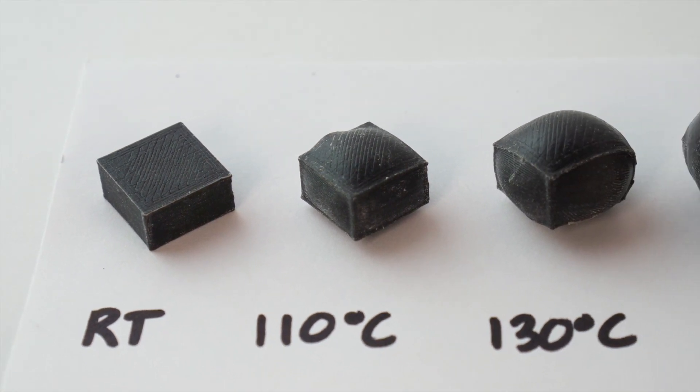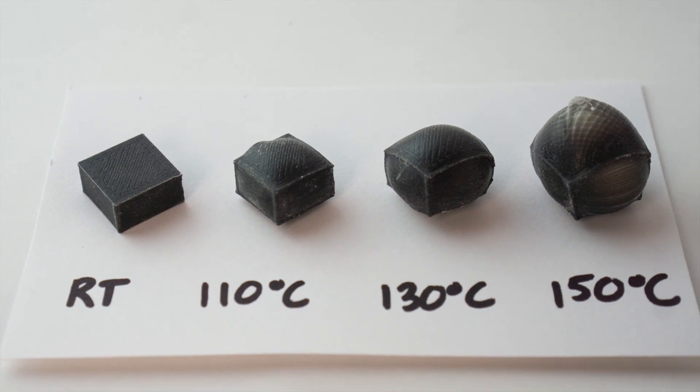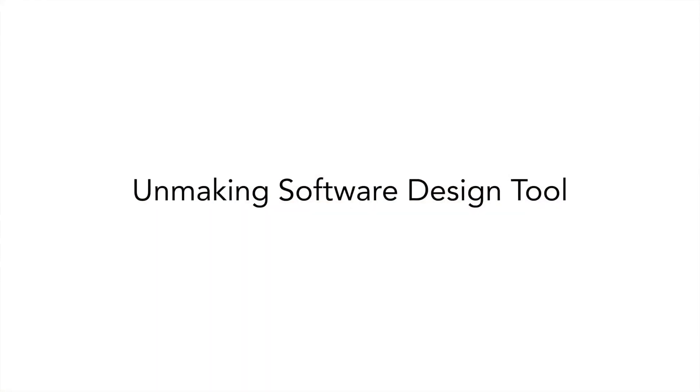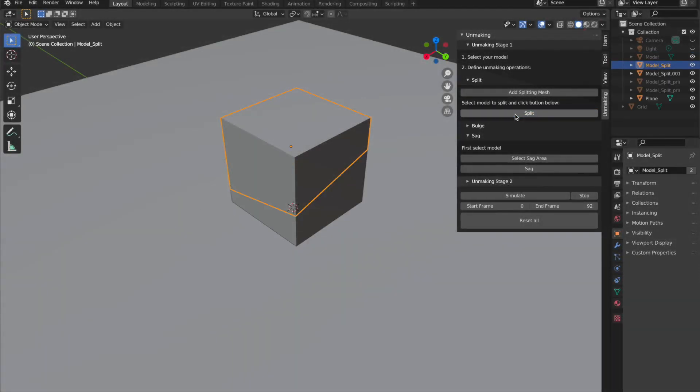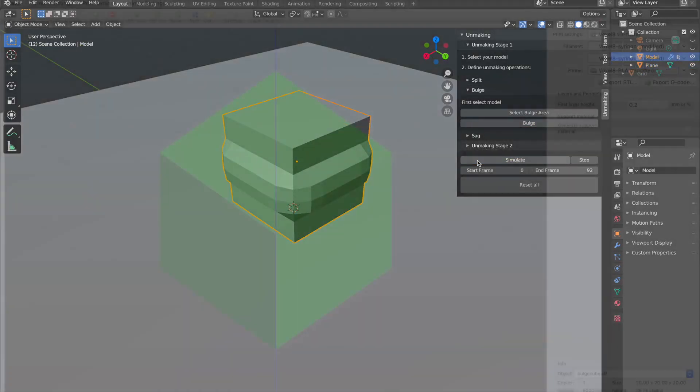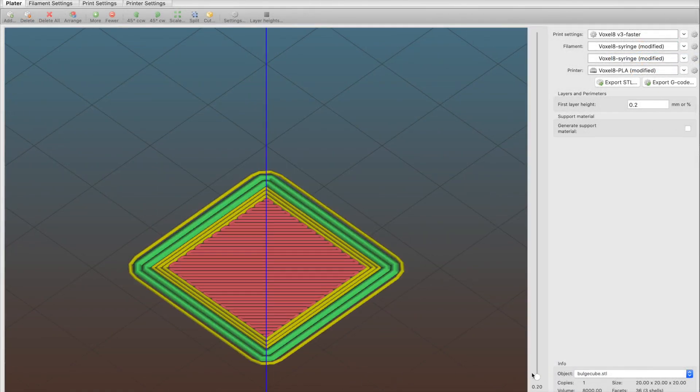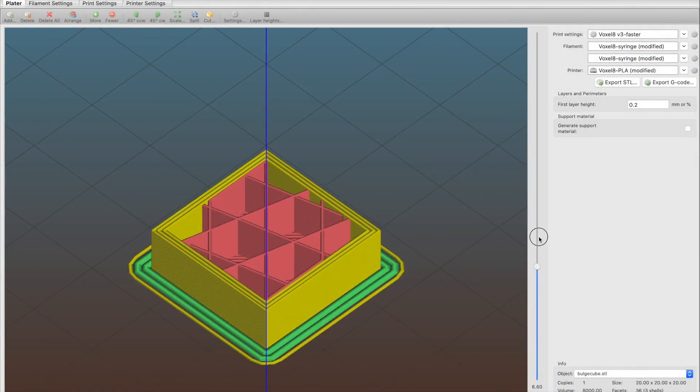To enable the design of such objects, we created a software tool that is integrated into standard CAD modeling software. Users may interactively design and visualize how they want their model to split or bulge. The tool automatically generates meshes that can be exported to standard slicing software and converted into machine G-code for 3D printing.